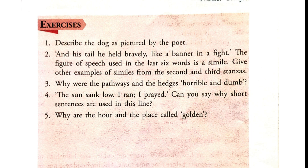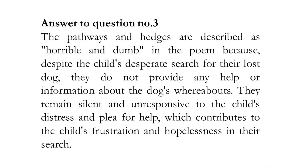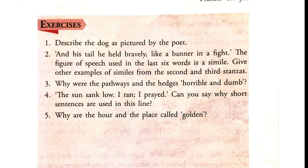Now let's talk about why the pathways and hedges are described as 'horrible and dumb' in the poem. The pathways and hedges are described this way because, despite the child's desperate search for their lost dog, they do not provide any help or information about the dog's whereabouts. They remain silent and unresponsive to the child's distress, contributing to the child's frustration and hopelessness.